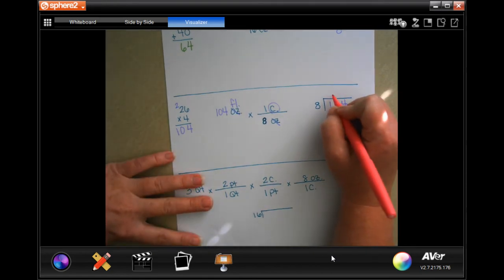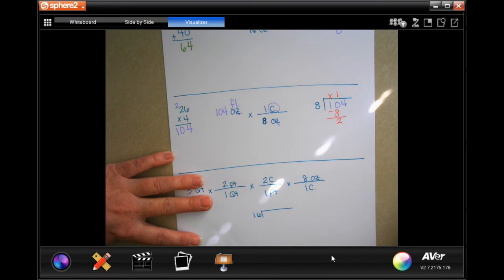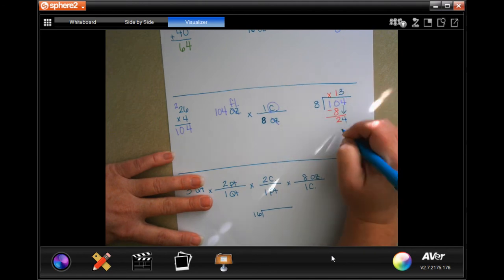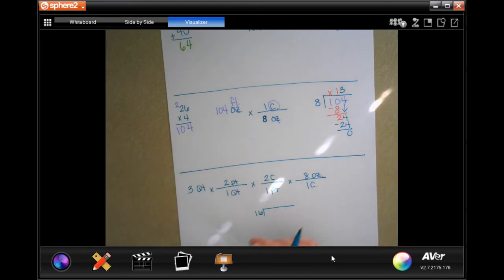Okay, so eight's not going to go into one, but it'll go into 10 one time. One times eight is eight, subtract, get two. Two is smaller than eight, so we're going to bring down our four. Eight goes into 24 three times. Three times eight is 24, boom. 13 cups.